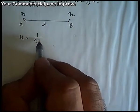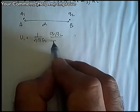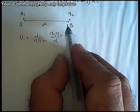The potential energy is 1 by 4 pi epsilon naught Q1 and Q2 upon d joule.